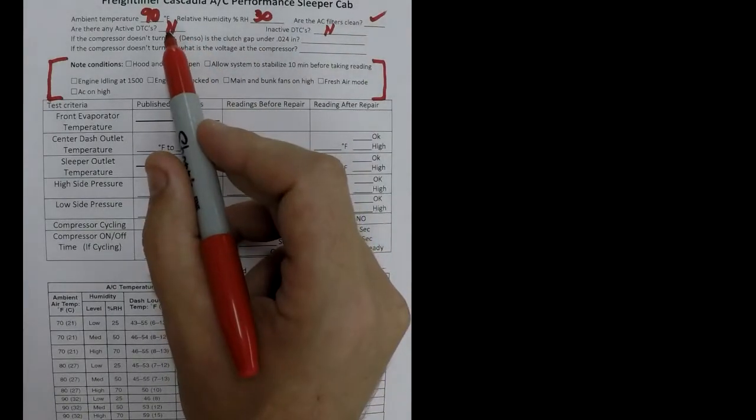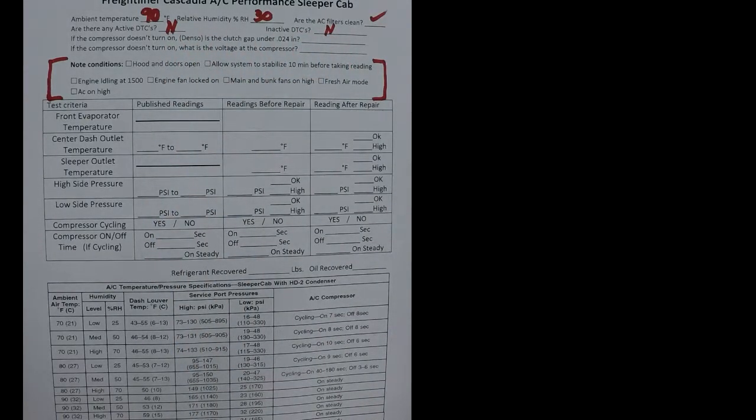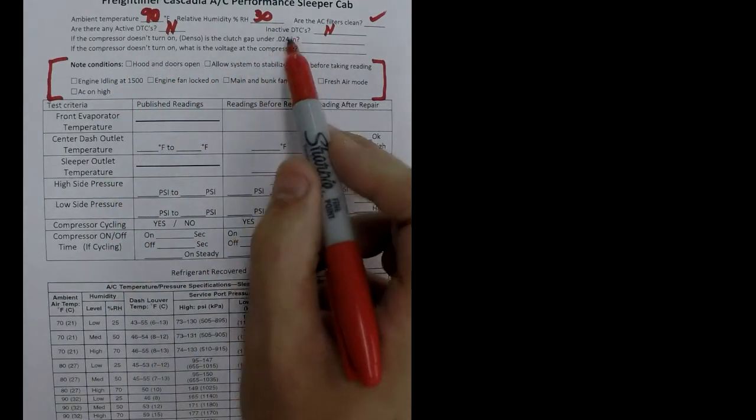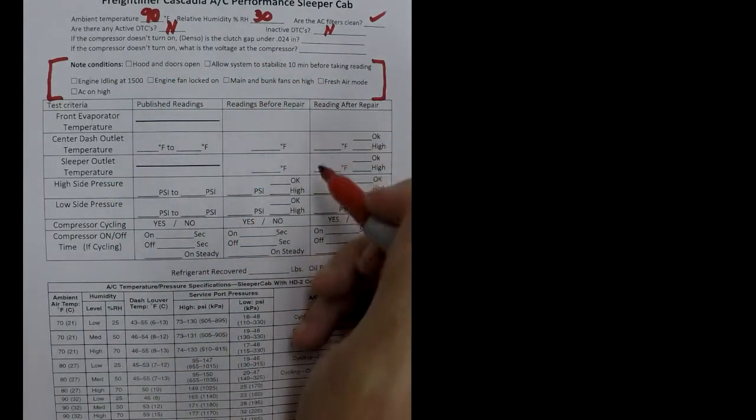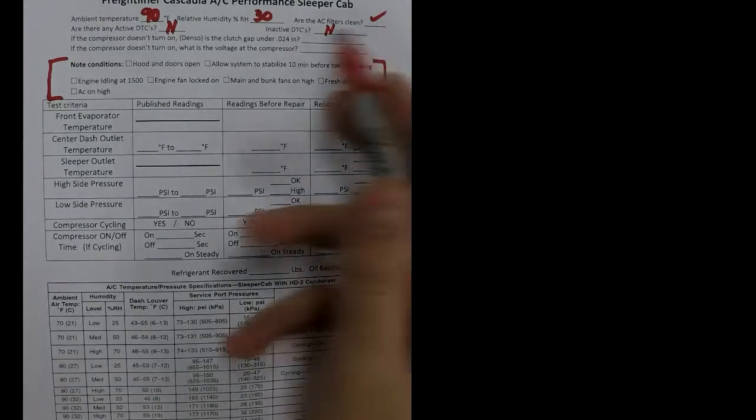We got a prep today, so there are no fault codes. Inactive, inactive. They can all affect performance. And if the compressor clutch does not come on, it gives you a couple things to check also. Clutch gap and voltage and whatnot. Our AC does run, so I'm not going to bother with that.